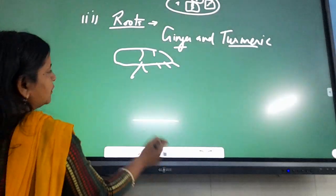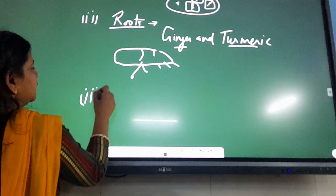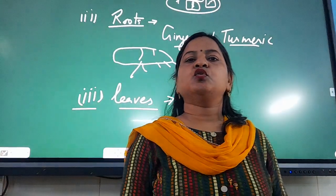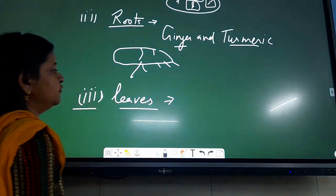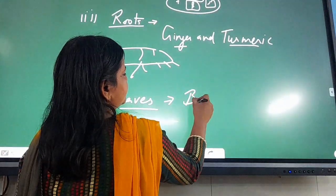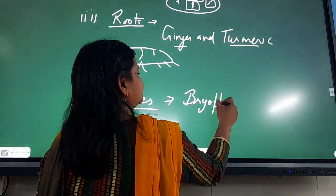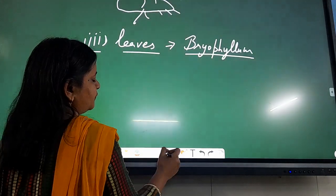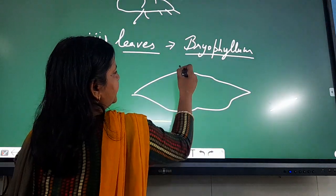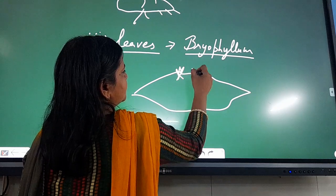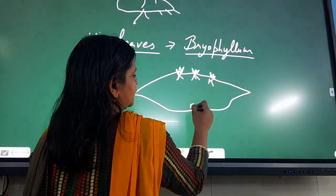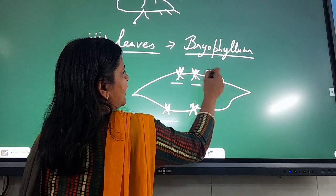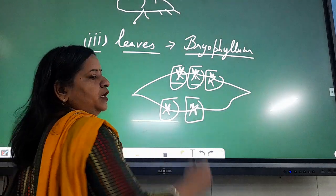Leaves can also be used to propagate a new plant through vegetative propagation. An example of leaf propagation is Bryophyllum. In Bryophyllum, at each node of the leaf, buds or new parts can appear and roots can emerge. So all these parts of the leaf can develop into a new plant.